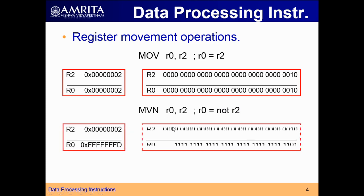An example: R2 equal to 0x00000002. When you perform MVN, the complement is taken — all zeros become ones and all ones become zeros. So you get 0xFFFFFFFD (binary complement of 2 is ...1101, which is D in hex). So MVN R0, R2 means R0 gets the complemented or negated value of R2, which is 0xFFFFFFFD.